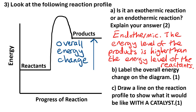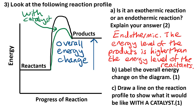Question C: draw a line on the reaction profile to show what it would look like with a catalyst. A catalyst lowers the activation energy, so the line starts and finishes at the same point, but this time it does not rise up as high because the activation energy is lower.